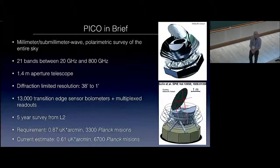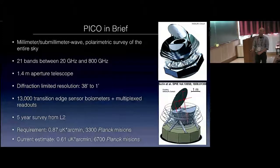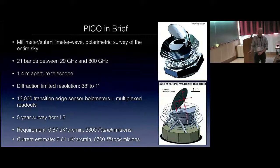What is PICO? PICO is a submillimeter-millimeter survey, a polarimetric survey of the entire sky. This is the outcome from our study. It has 21 bands between 20 and 800 gigahertz. It's based on a 1.4 meter aperture telescope. The resolution is 1 arc-minute at 800 gigahertz, and about 40 arc-minutes at 20 gigahertz. It uses 13,000 transition edge sensors with multiplex readouts. It's a five-year survey from L2. The requirement is to reach 0.87 microkelvin arc-minute over the entire sky. This is equivalent to 3,300 Planck missions. We think we will do better, and we'll reach about 0.6 microkelvin arc-minute, which is 6,700 Planck missions over the sky.